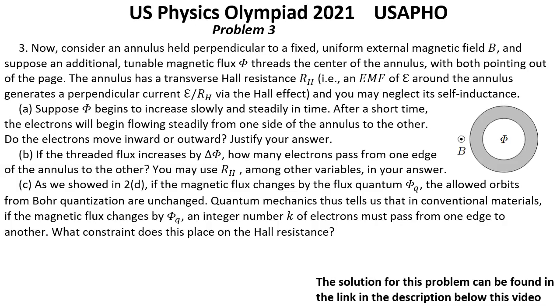Question B: If the threaded flux increases by delta Φ, how many electrons pass from one end of the annulus to the other? You may use RH among other variables in your answer.